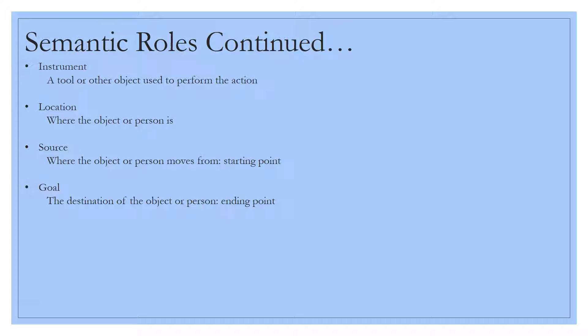Next, we have the source, which is where if you have action occurring with movement in a sentence, it's where the object or the person moves from, otherwise known as a starting point. And then you have, on the other hand, the goal, which is the destination of the object or person, their ending point. They can start by their car and end walking into their house. So Sally had to go back out to her car to get her laptop before going in the house for the night.